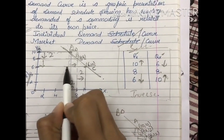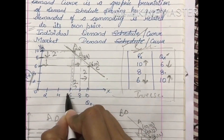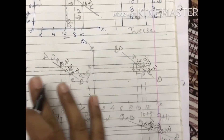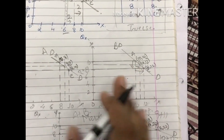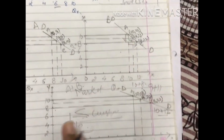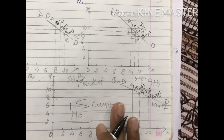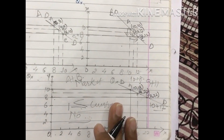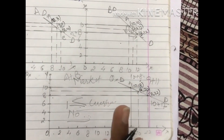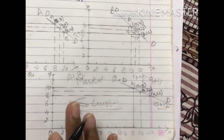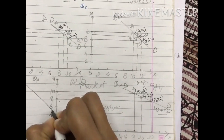So, to summarize: we have seen the individual demand curve, then two individual customers summed up to get the market demand curve. Now we are going to start a new topic — why does the demand curve slope downward?